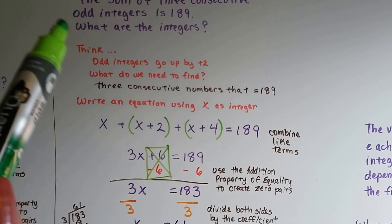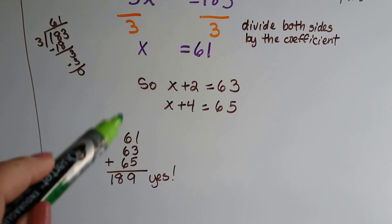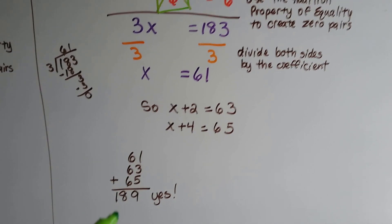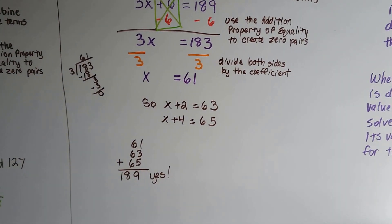Now we know what our 3 consecutive odd integers are. Because that's what we needed to find, right? What the integers were. We know they're 61, 63, and 65. And we add them up to make sure it totals 189. That's what we were trying to get to. We know we did it correctly.